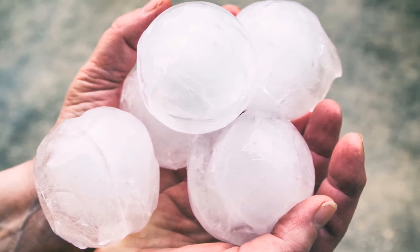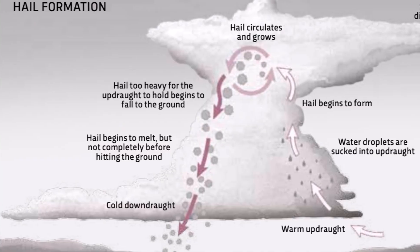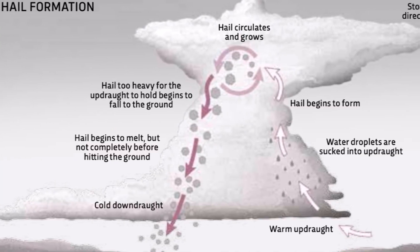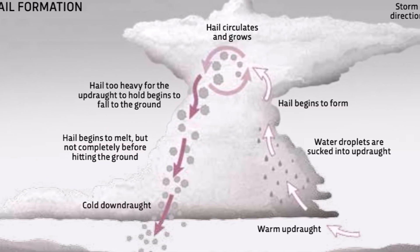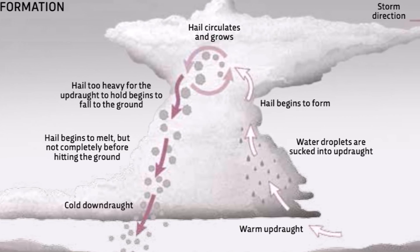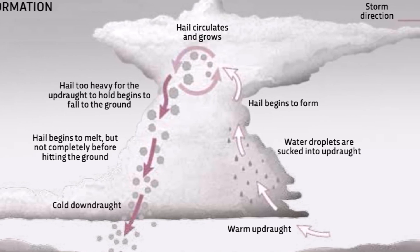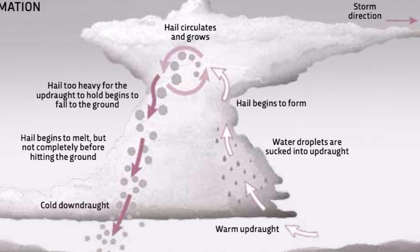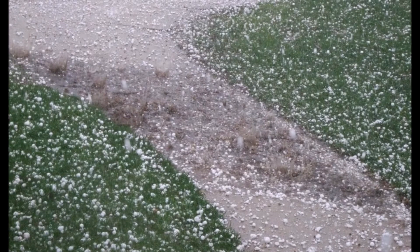The air moves in an upward direction — it is stronger and the ice takes form. When the air moves in the lower direction, the ice also forms.